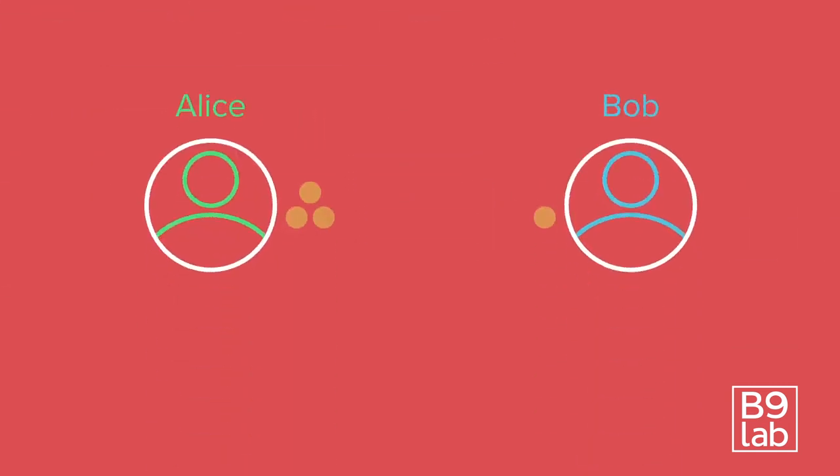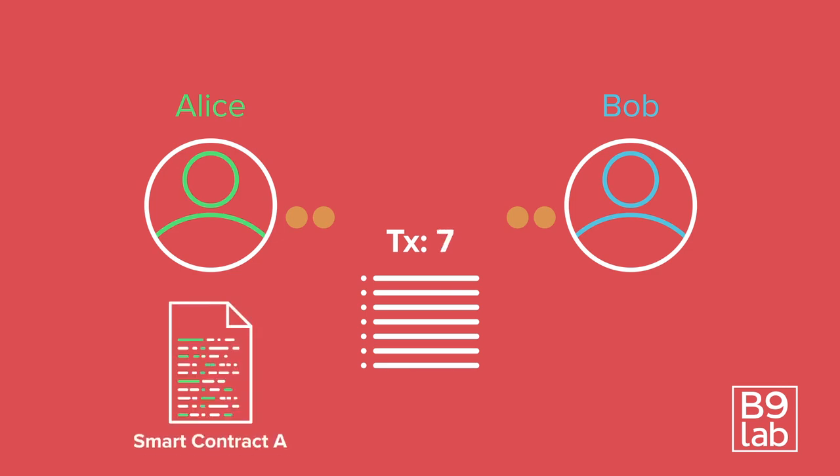Data is encoded in transactions. This can be information about transferring cryptocurrency, or it can contain either new smart contract code or a call of a smart contract function.